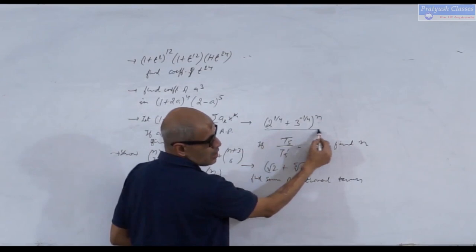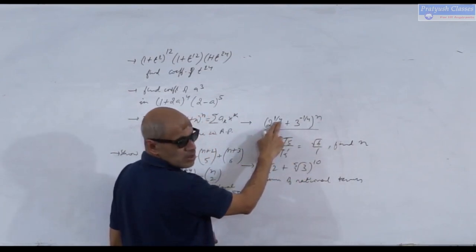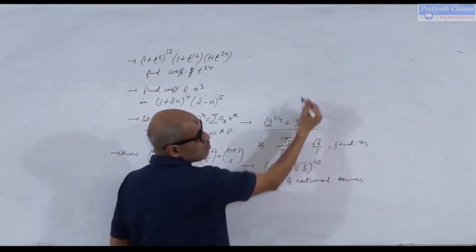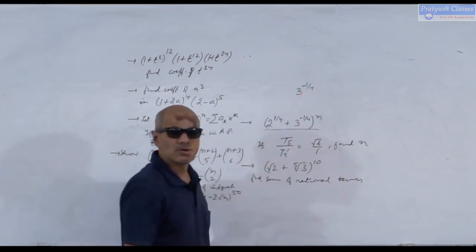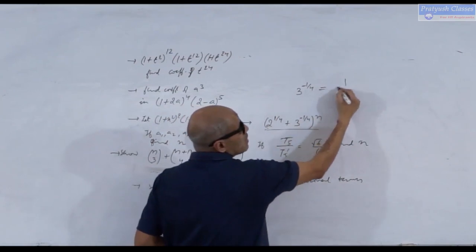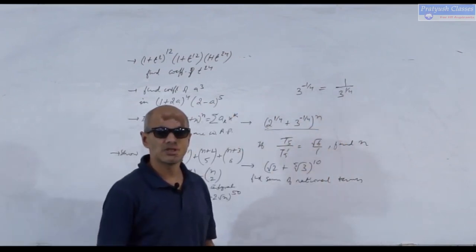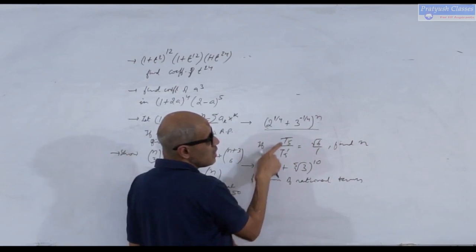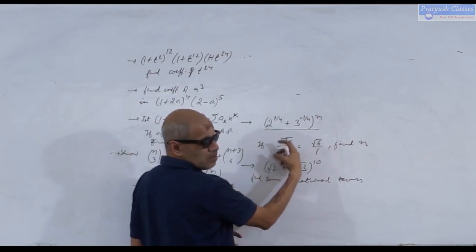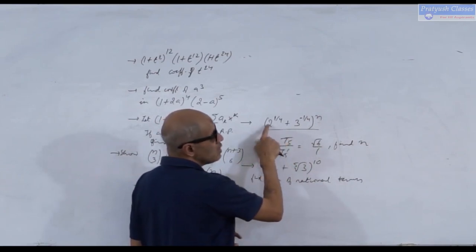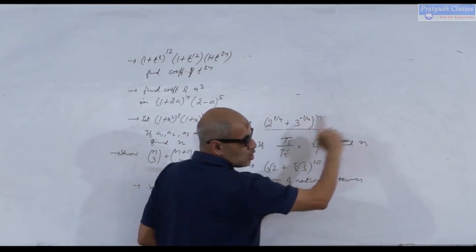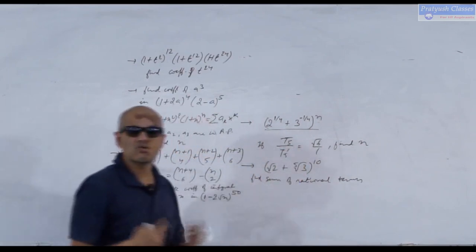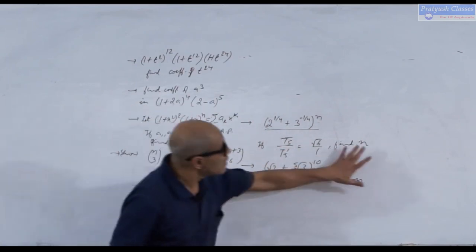New problem: the binomial expression is (2^(1/4) + 3^(-1/4))ⁿ, where 2^(1/4) is the 4th root of 2 and 3^(-1/4) is the reciprocal of the 4th root of 3. The question states that T5 from the beginning divided by T5 from the end equals √6 : 1. We need to find the value of n.